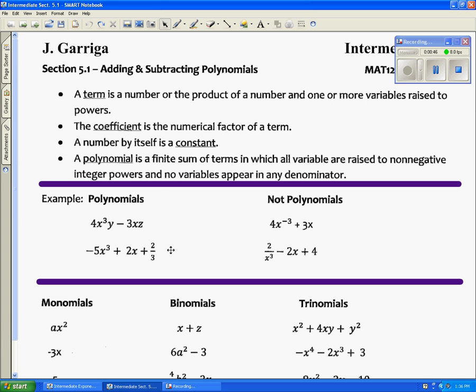For example, these are some polynomials listed here. These are not polynomials because of that negative exponent, variables in the denominator. That's the reason why these two expressions are not polynomials.